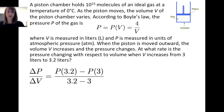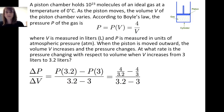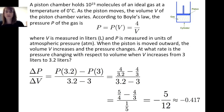Using the template, Δp / Δv = (p(3.2) − p(3)) / (3.2 − 3). Substituting into our function gives (4/3.2 − 4/3) / (3.2 − 3). Performing the algebra and simplifying, we get −5/12, which is approximately −0.417.